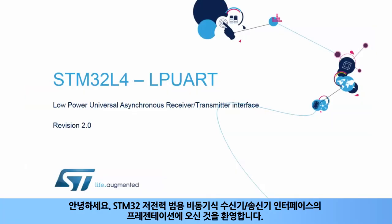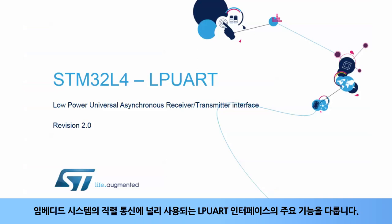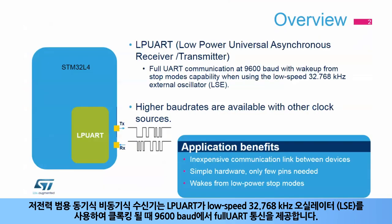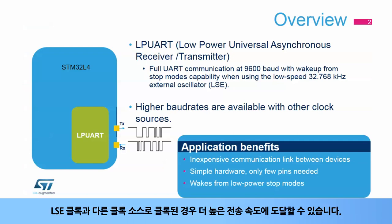Hello and welcome to this presentation of the STM32 Low Power Universal Asynchronous Receiver-Transmitter Interface. It covers the main features of this interface, which is widely used for serial communications. The LPUART provides full UART communications at 9,600 baud when clocked using a low-speed external 32.768 kHz oscillator, or LSE. Higher baud rates can be reached when clocked by sources different from LSE.